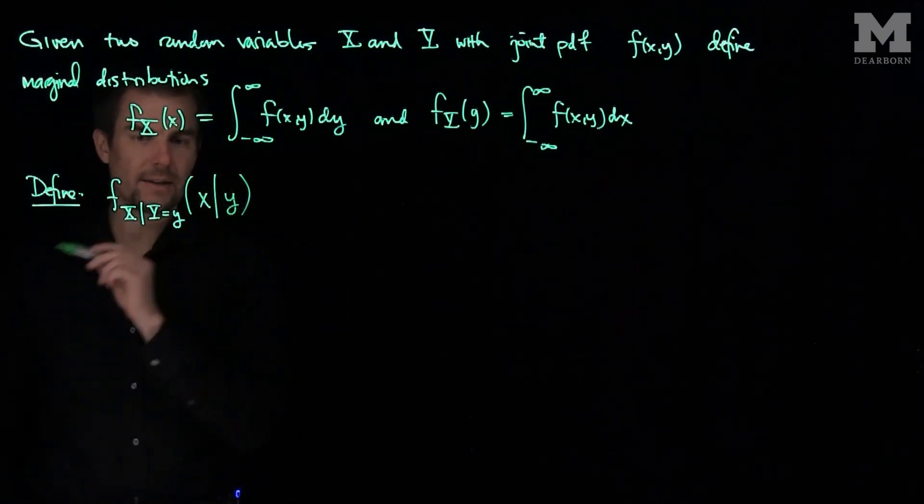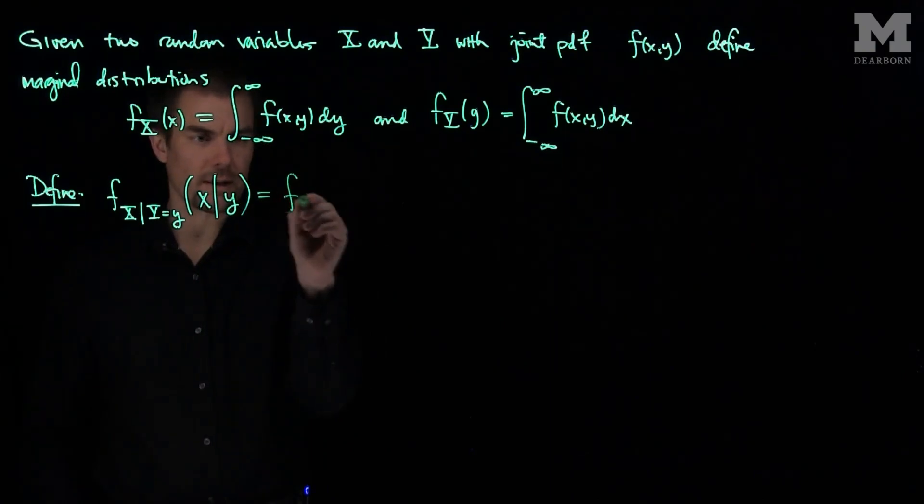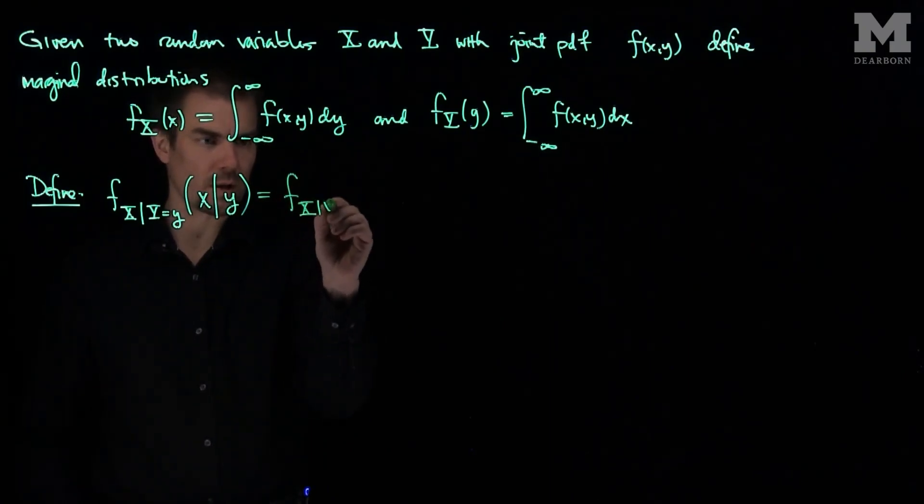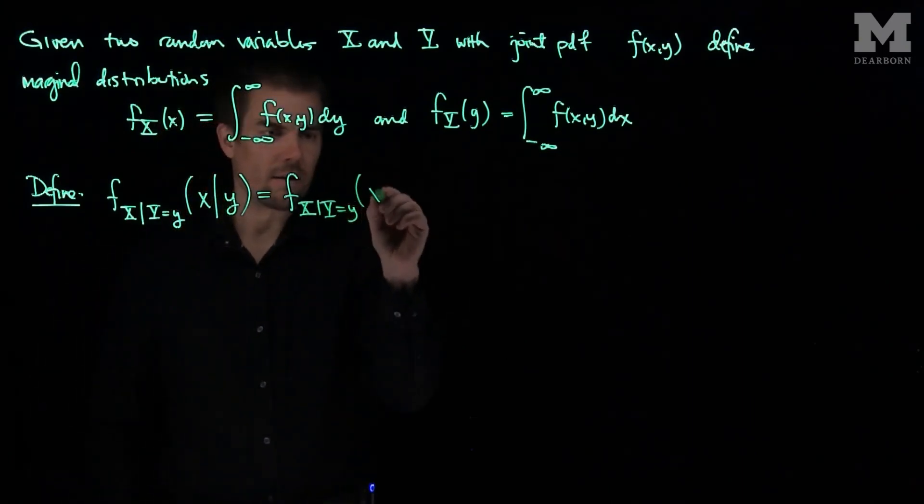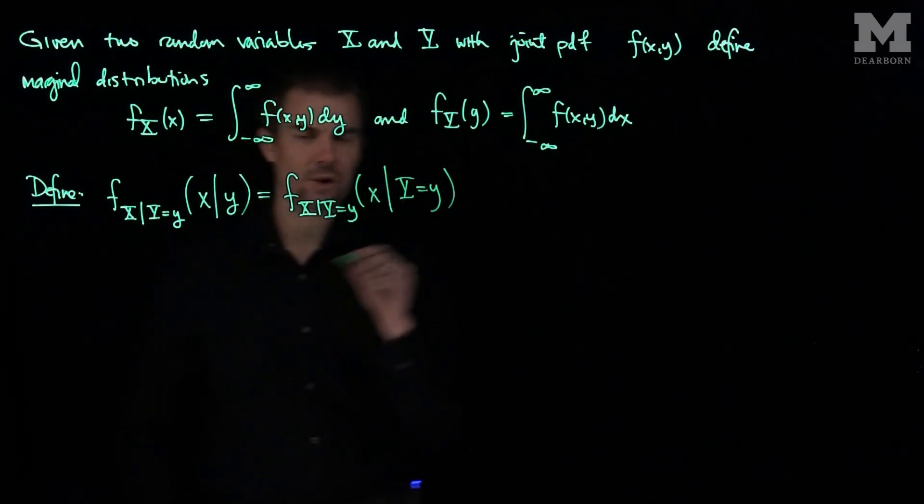Meaning, of course, that the random variable Y is equal to y. So we can write this in this way, or we can also write it like this to make it more clear. Whatever notation is more clear, given that Y is equal to little y, f(x|Y=y). That's another possible notation.